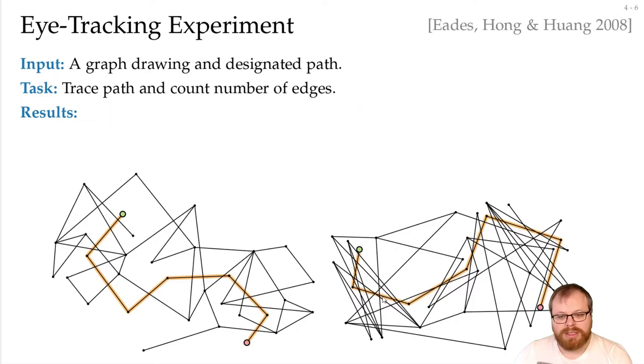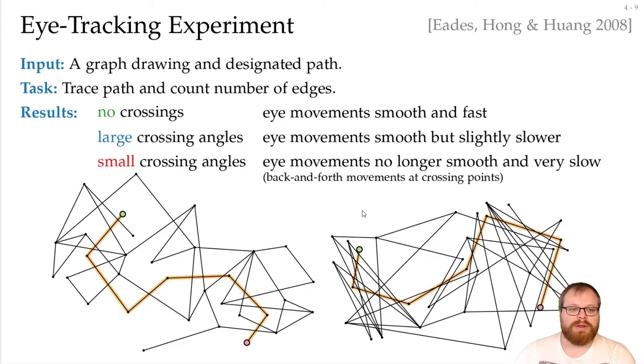Here where it's highlighted, it's not so hard, but if we remove the highlighting, then it gets quite crowded here. So in this part, it's tough to find the correct way. So if we have small crossing angles, then the eye movements are not as smooth, and they are very slow. There is a lot of back and forth movements at the crossing points. So that means it's great if we have few crossings, and if we have large crossing angles.